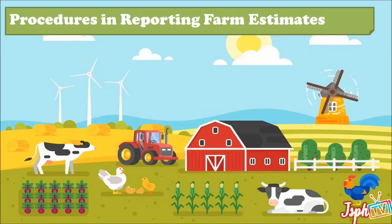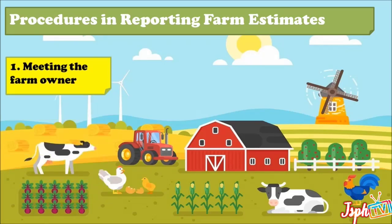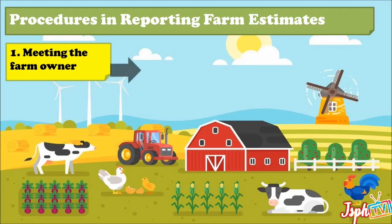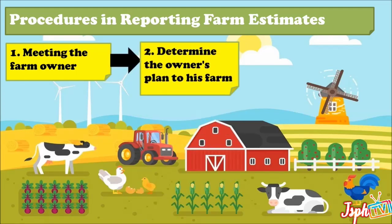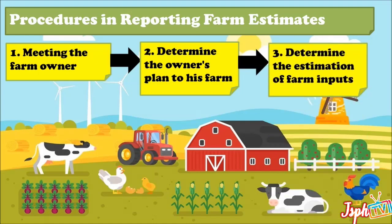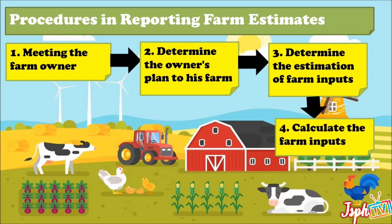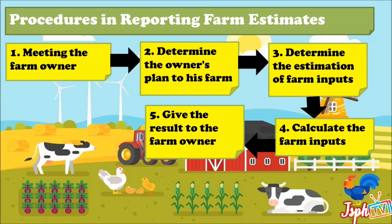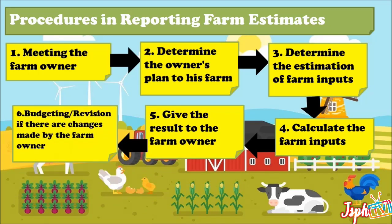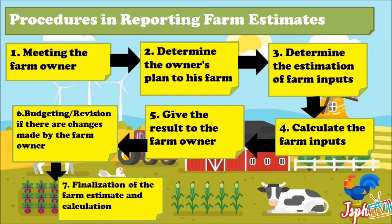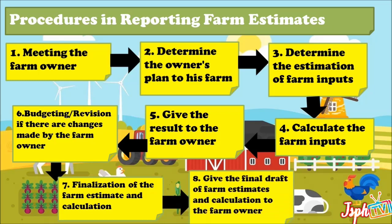Procedures in Reporting Farm Estimates: First, meeting the farm owner. Second, determine the owner's plan for his farm. Third, determine the estimation of farm inputs. Fourth, calculate the farm inputs. Fifth, give the result to the owner. Sixth, budgeting revisions if there are changes made by the farm owner. Finalization of the Farm Estimate and Calculation, and give the final draft to the farm owner.